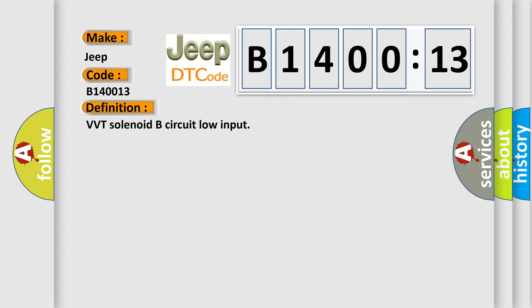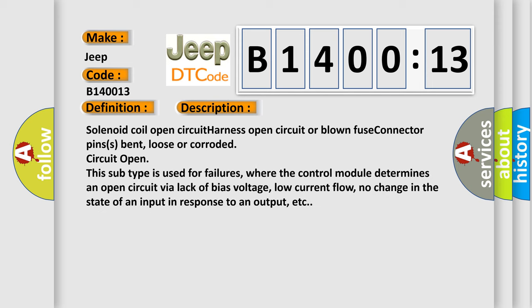And now this is a short description of this DTC code. Solenoid coil open circuit, harness open circuit or blown fuse, connector pins bent, loose or corroded, circuit open. This subtype is used for failures where the control module determines an open circuit by lack of bias voltage, low current flow, no change in the state of an input in response to an output, etc.